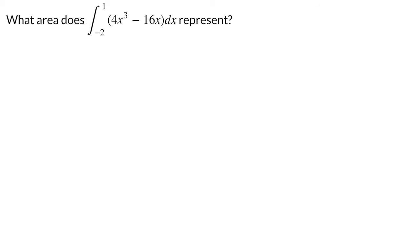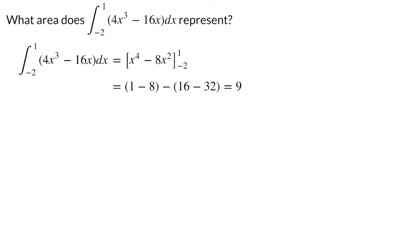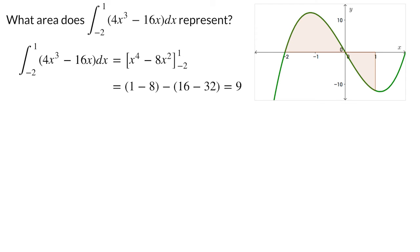Let's look at one final example. If we take the integral from negative 2 to 1 of the function 4x cubed minus 16x, we will get a number since it is a definite integral. In terms of area, what does that number represent? Let's go ahead and compute the integral. The antiderivative is x to the 4 minus 8x squared. We evaluate it at 1 and negative 2 and take the difference. The number we get for our answer is 9. To see what this 9 represents in terms of area, let's plot the graph of the function. In between negative 2 and 1, the function is both positive and negative. It is positive from negative 2 to 0 and then negative from 0 until the end of our integral at 1.